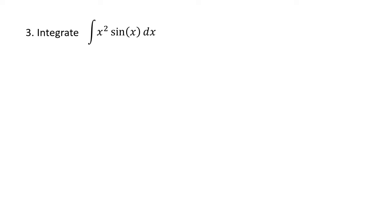This one's a little bit more complicated but pretty similar to the first problem. We've got two functions: x squared and sine of x. Similarly to what we did in problem 1, we're going to make the polynomial part — the x squared — be u, and the trig part be dv. x squared turns into 2x when we take its derivative, but would turn into x cubed — more complicated — if we took its antiderivative, so this is the way we want to do it.